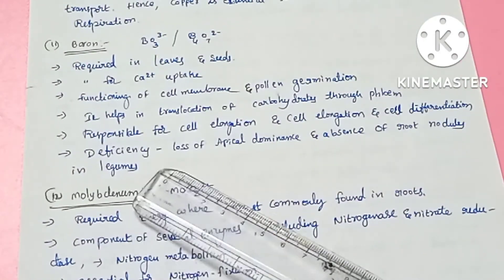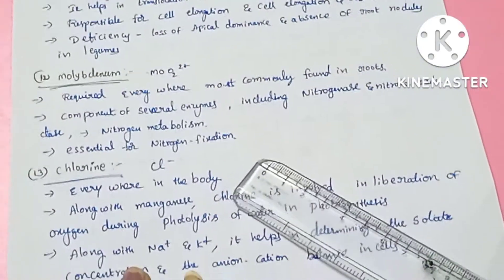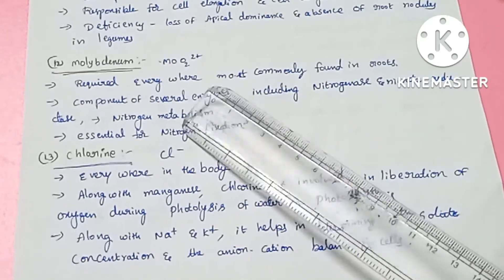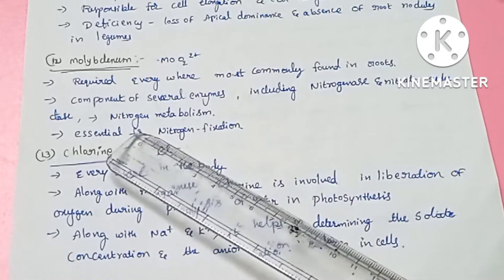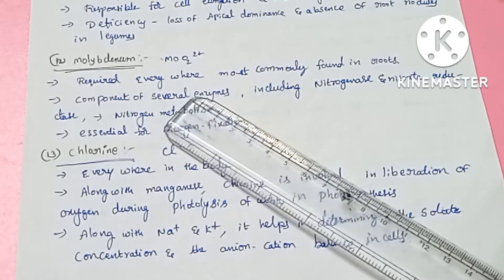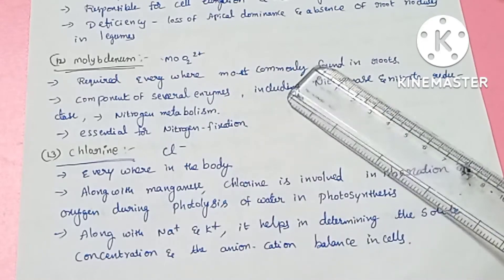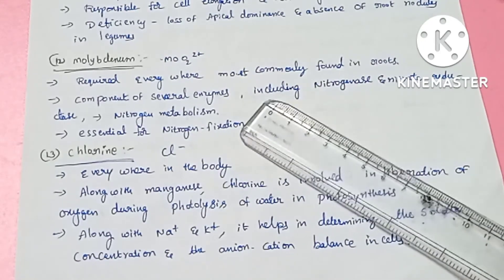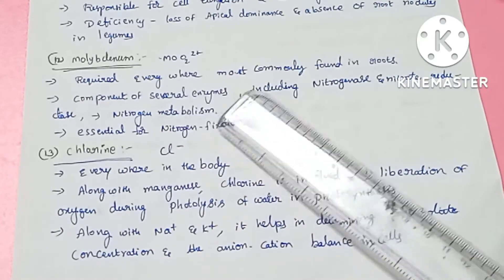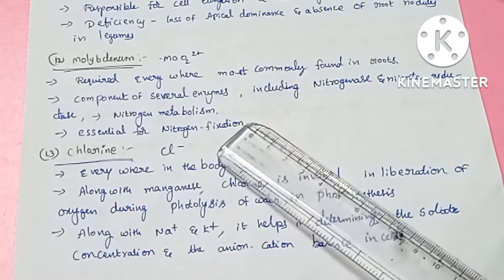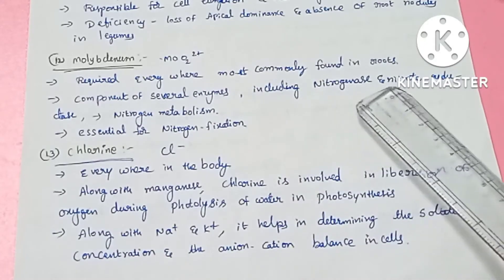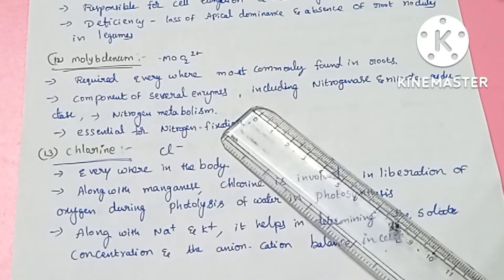The next element is molybdenum, absorbed in the Mo2+ form. It is required throughout the plant body, particularly in roots. Molybdenum is a main component of the enzymes nitrogenase and nitrate reductase, which are involved in nitrogen metabolism.